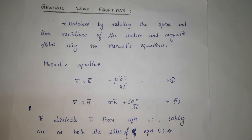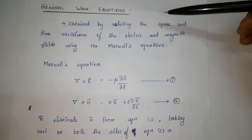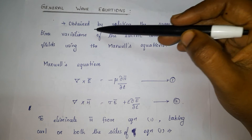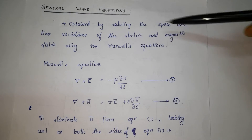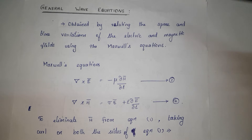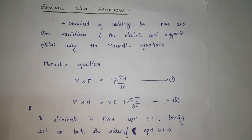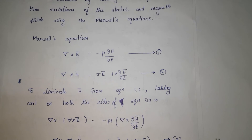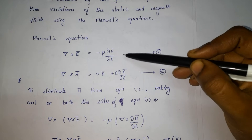Here we are going to discuss about the general wave equation. In general, the wave equation can be obtained by relating the space and time variations of the electric and magnetic field using Maxwell equations. To derive the wave equation, we are using Maxwell equations. There are four Maxwell equations, but here we are using two Maxwell equations.